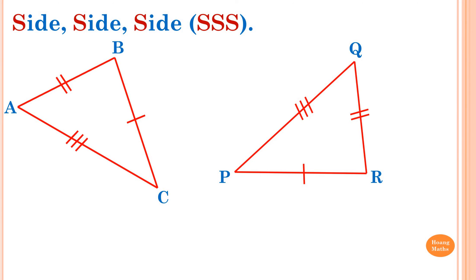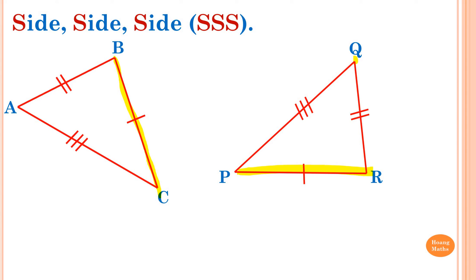For the SSS example: AB corresponds to QR and they are equal; AC corresponds to PQ and they are equal; BC corresponds to PR. So three corresponding sides are equal, therefore triangle ABC is congruent to triangle QRP by SSS — three corresponding matching sides are equal.